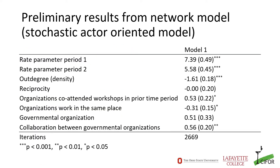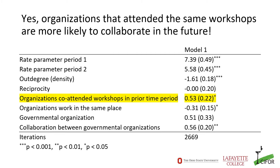Because the data span multiple time periods, we can measure how network characteristics at one time affect outcomes in the future. This type of model measures the likelihood of a collaborative interaction based on parameters that can vary over time. These are preliminary results, but let me highlight a few key findings. First, we find that when organizations jointly participate in workshops, they're more likely to collaborate in the future.